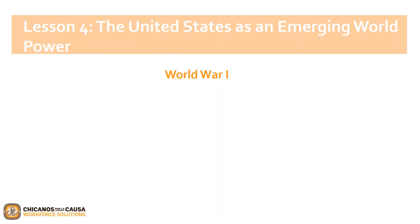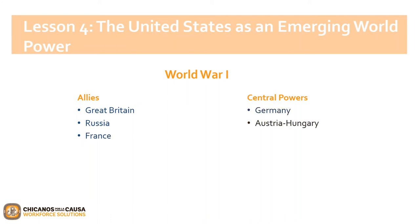Let's start with World War I. The war began in Europe in 1913 between two groups: the Allies and the Central Powers. The Allies included nations like Great Britain, Russia, and France. The Central Powers included Germany, Austria-Hungary, and the Ottoman Empire. The war was fought for three years until the United States joined in 1917, because Germany was sinking American ships. The United States joined the Allies, and the war ended in November of 1918 when the Allies defeated the Central Powers.